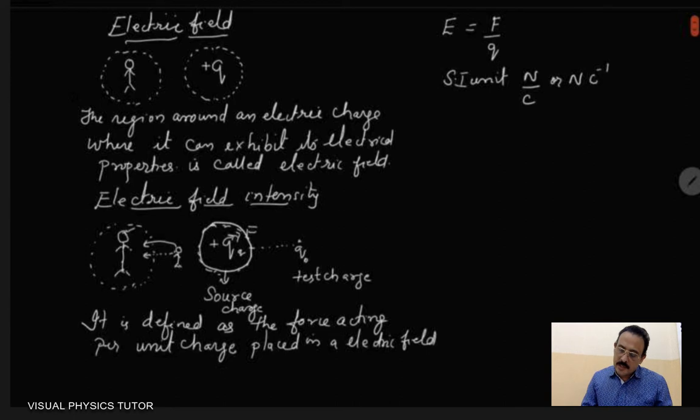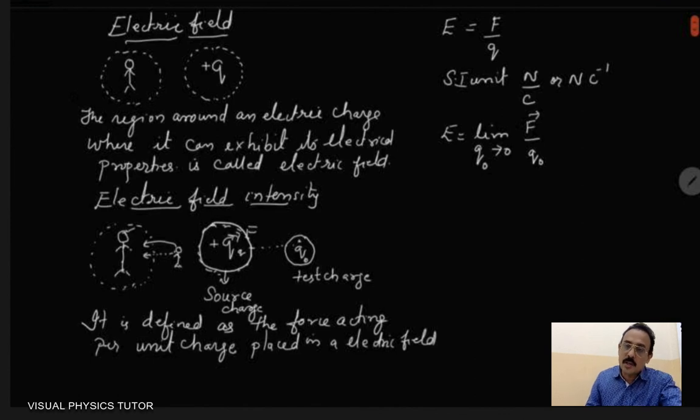Alternatively, we call this as a test charge. Q0 is a test charge over here. This test charge will be vanishingly small. That means we can write here E is equal to limit q0 tends to 0. That means it is not 0, it is tending towards 0. That means it is infinitely small, vanishingly small. And it is F vector by q0.